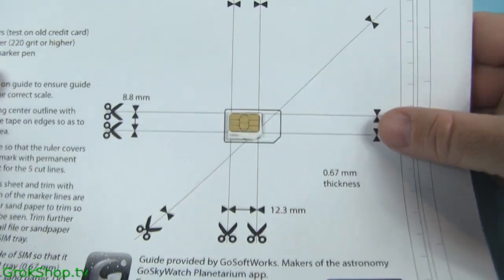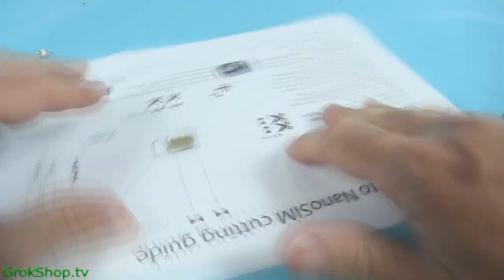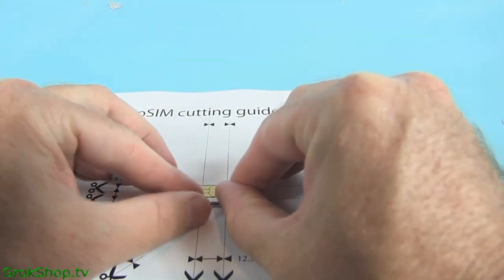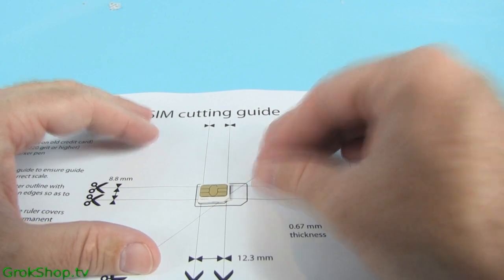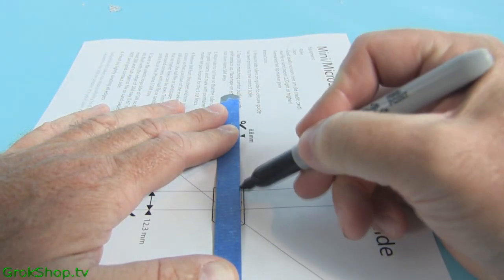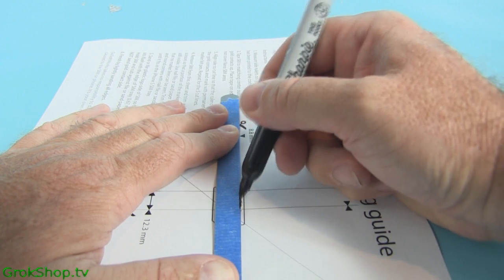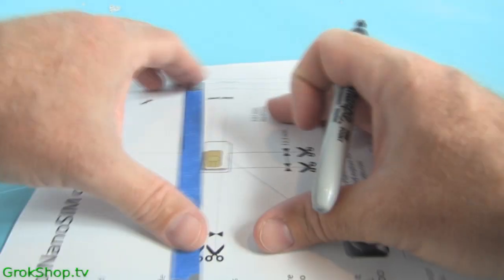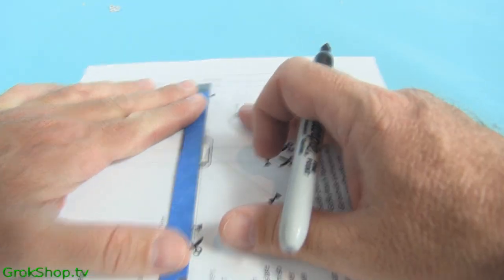Next you want to take a Sharpie or some other form of permanent marker and a ruler and mark along the boundaries on the outside of where the cuts are indicated.